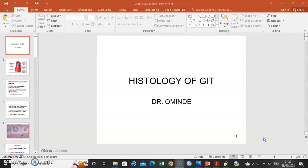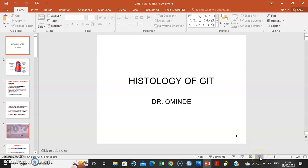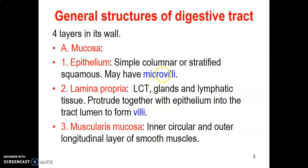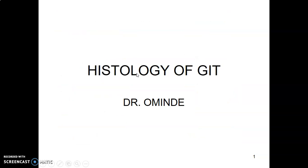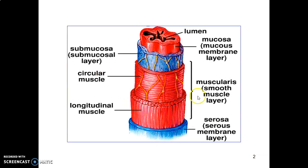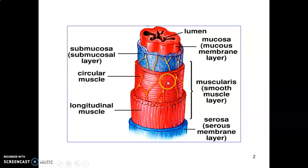Hello everyone, my name is Dr. Ominde and I'm going to discuss the histological organization of the hollow gastrointestinal tract. The histology of the GI tract includes a lumen where food is located, then the inner layer is the mucosa, followed by the submucosa, then the muscularis externa made up of smooth muscle cells with an inner circular and outer longitudinal layer, and lastly the serosa.